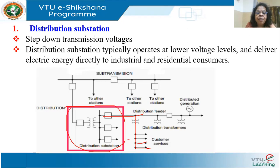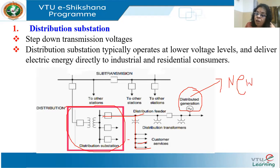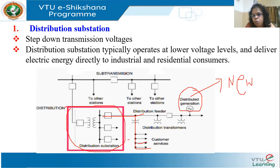A new addition to the distribution system is distributed generation, mostly solar power, since solar PVs can generate at very low wattages. Today, generation has entered the distribution side and we call it distributed generation. This is the first stage in the distribution network.